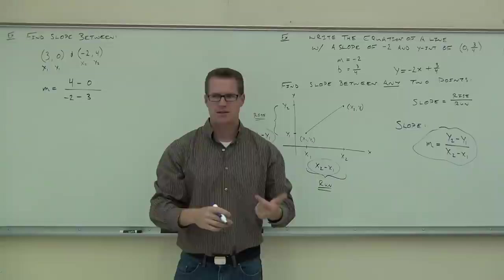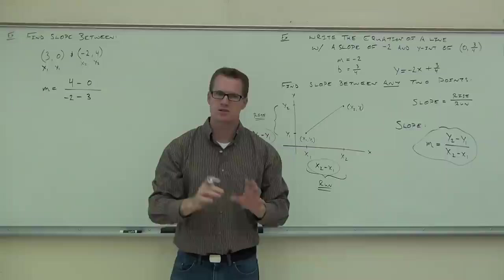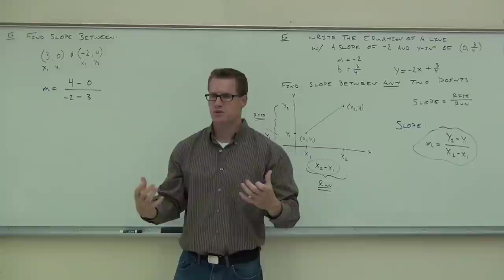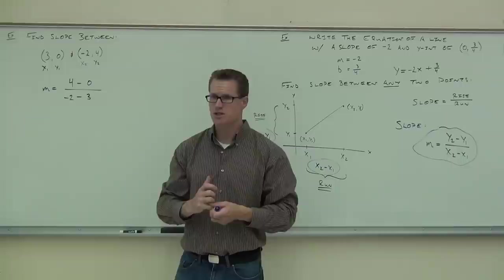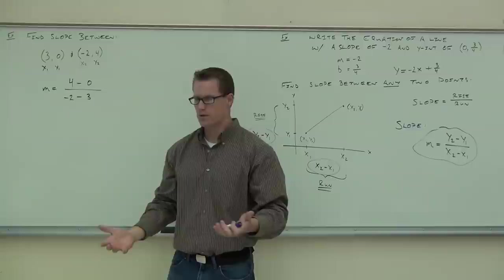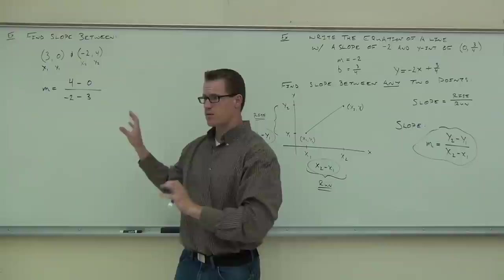When you go quickly on slope, that's kind of where the mistakes happen. So take your time on the slope portion. It's very similar to doing a simplification problem with rational expressions and rushing through the factoring — when you rush and get the wrong factorization, it doesn't work out well. Same thing happens with your slope. Take your time and make sure you have this part right.